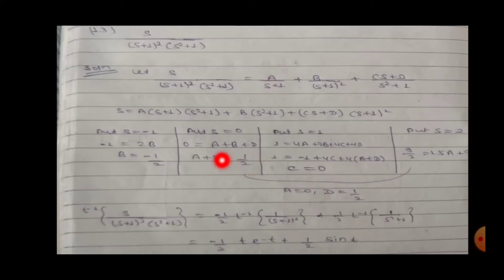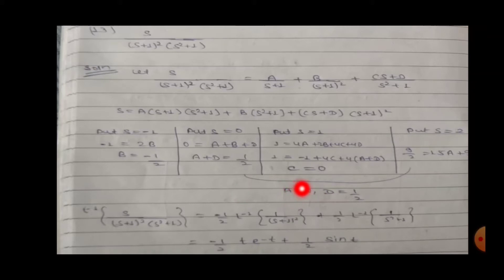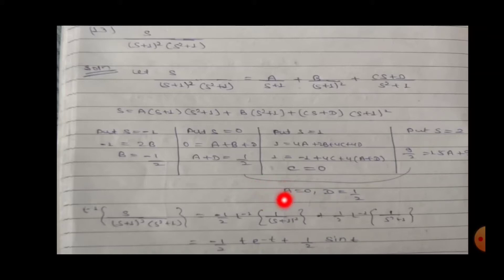Since A is zero, B is minus one by two. The Laplace inverse of 1/(s+1)² is computed: since C is zero and D is one by two, the Laplace inverse of 1/(s²+1) gives sin t. For 1/(s+1)², the Laplace inverse of d/ds(e^(-t)) gives t·e^(-t), so the answer is minus one by two · t·e^(-t) plus one by two · sin t.